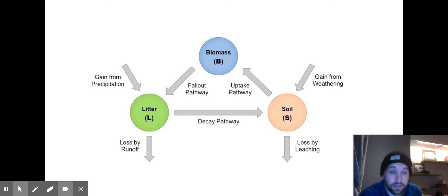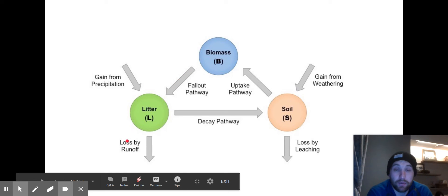And now these three stores are linked. Biomass and plants absorb nutrients from the soil through their roots. When biomass dies, we have this fallout pathway, which is leaves which fall off the trees, either seasonally or throughout the year depending whereabouts we are, and that transfers nutrients from the biomass into the litter.